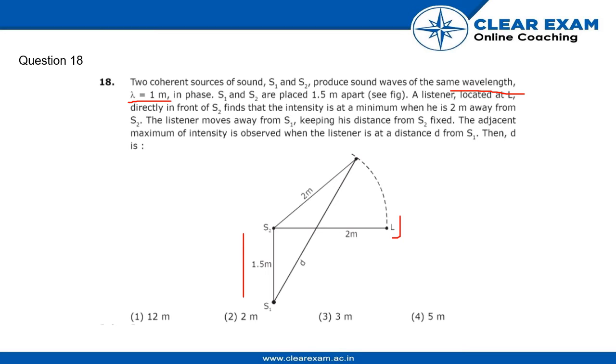The adjacent maximum of intensity is observed when the listener is at distance d from S1. We have to find what d is. Let's go on to the solution.